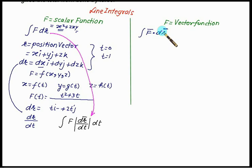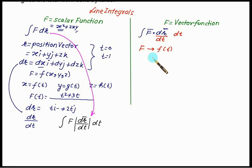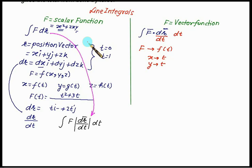This is how you solve the scalar function line integral. For the vector function, you do not take the modulus of dr/dt. Instead, simply take the dot product of f-bar with dr/dt, then multiply by dt. Since f is a function of t and r is a function of t, dr/dt is also a function of t. Then put the limit from t initial to t final. In summary: for scalar functions, take the modulus of dr/dt; for vector functions, simply take dr/dt.